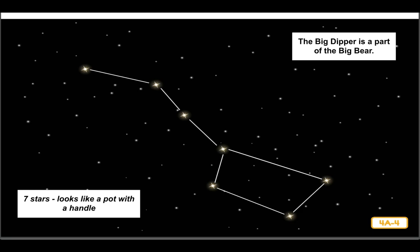You might also think it looks like a pot with a handle. What does it look like to you? The Big Dipper is made up of seven stars. The Big Dipper looks different in the sky depending on the time of the year.